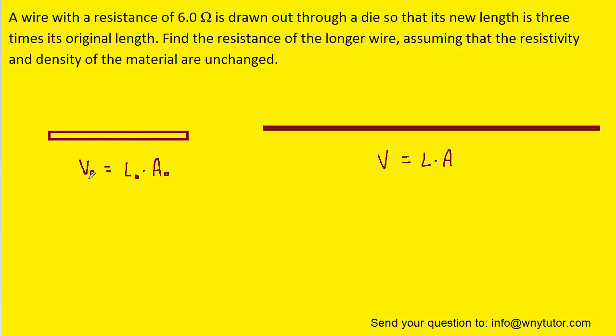We know that the original volume of the wire would equal its length multiplied by its cross-sectional area. And the final volume of the wire would be the final length multiplied by the final cross-sectional area. As the wire is drawn from its original shape to its final shape, the volumes would remain constant. And so we can take the expression for the initial volume and set it equal to the final volume.